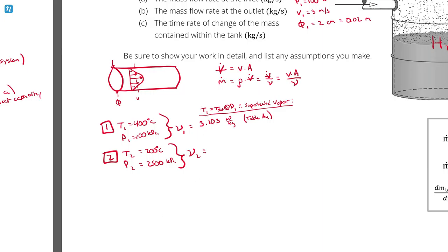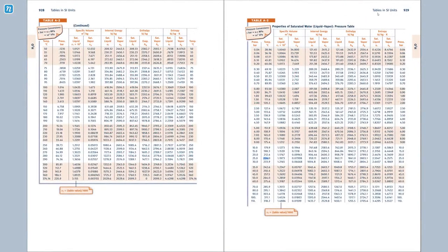Now repeating the same process for state 2. I look up 2500 kilopascals, which is 25 bar, in the saturated water tables. At 25 bar, the saturation temperature is 224 degrees Celsius. My temperature at state 2 is 200 degrees Celsius, which is below the saturation temperature — therefore the phase is a compressed liquid. T2 is less than T-sat at P2, therefore compressed liquid.